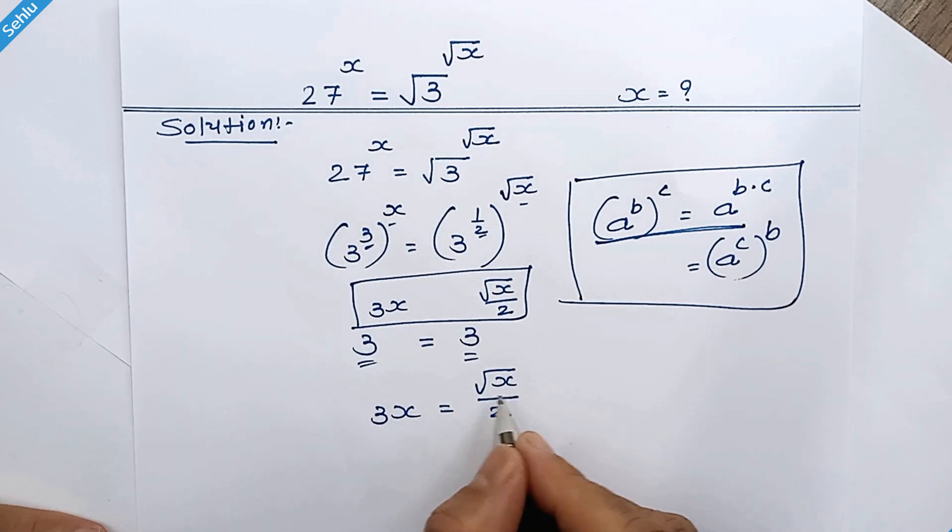Now we will move this entire thing on left hand side. So it will be 3x minus square root of x over 2 is equal to 0.